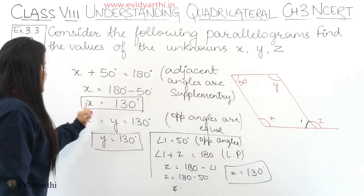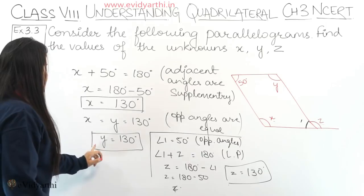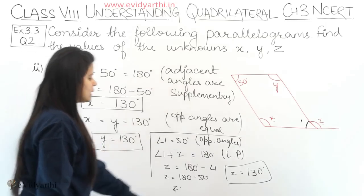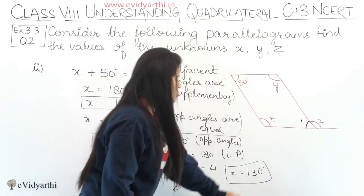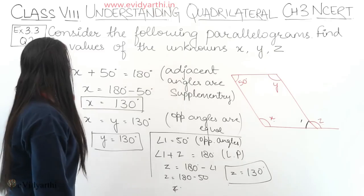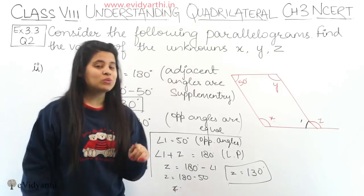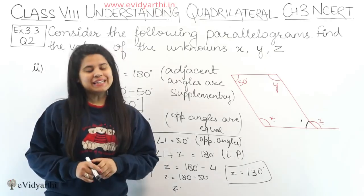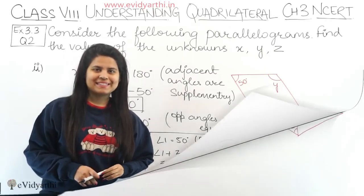So x = 130°, y = 130°, and z = 130°. This was part number 2. Now let's come to the next part.